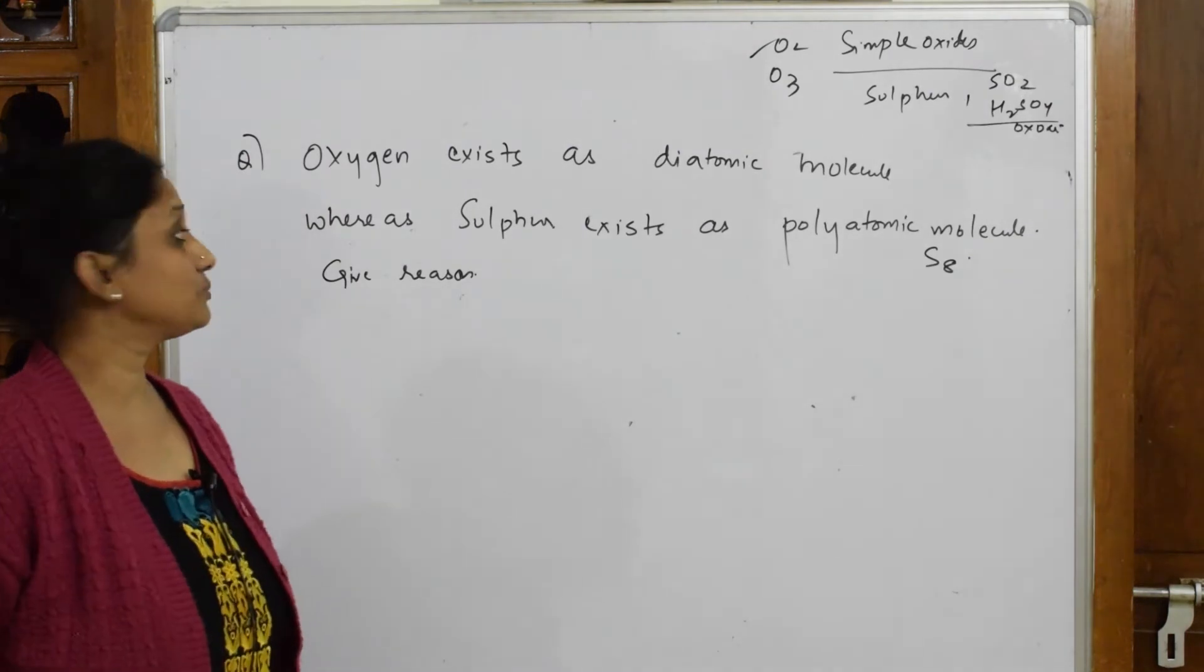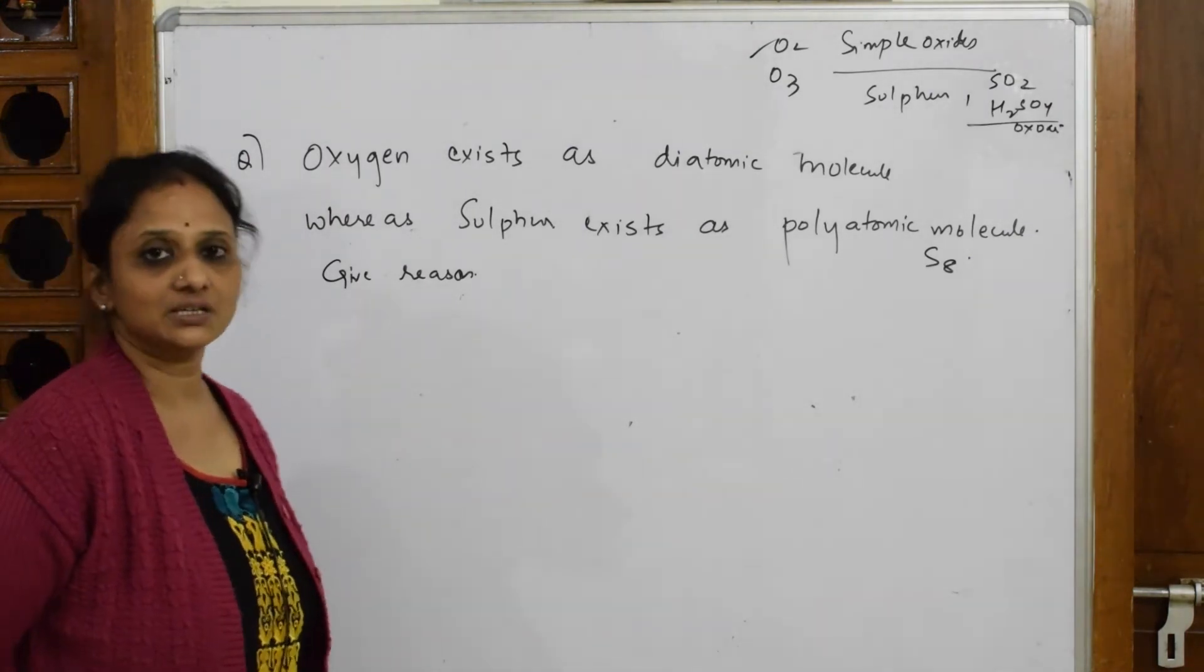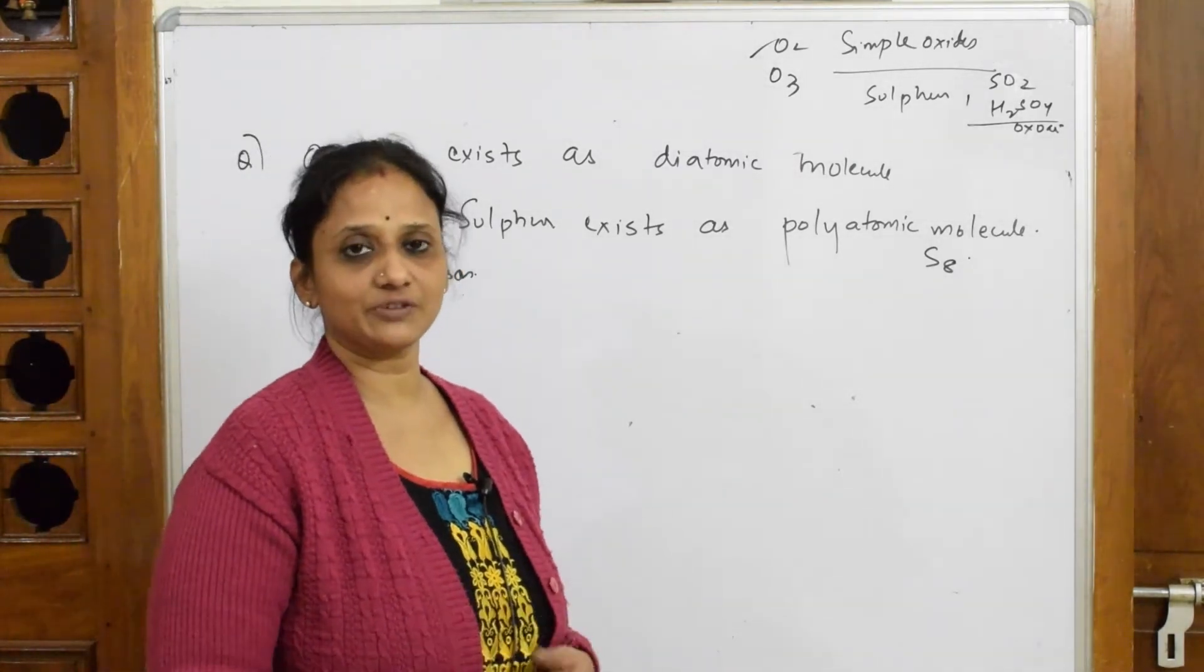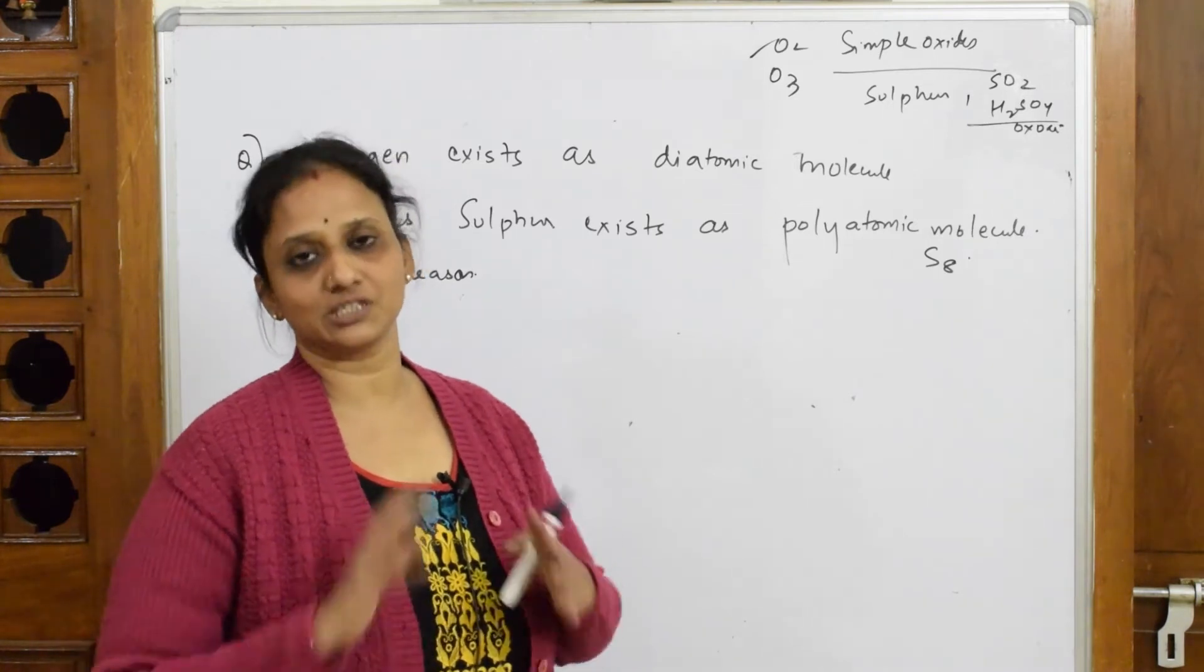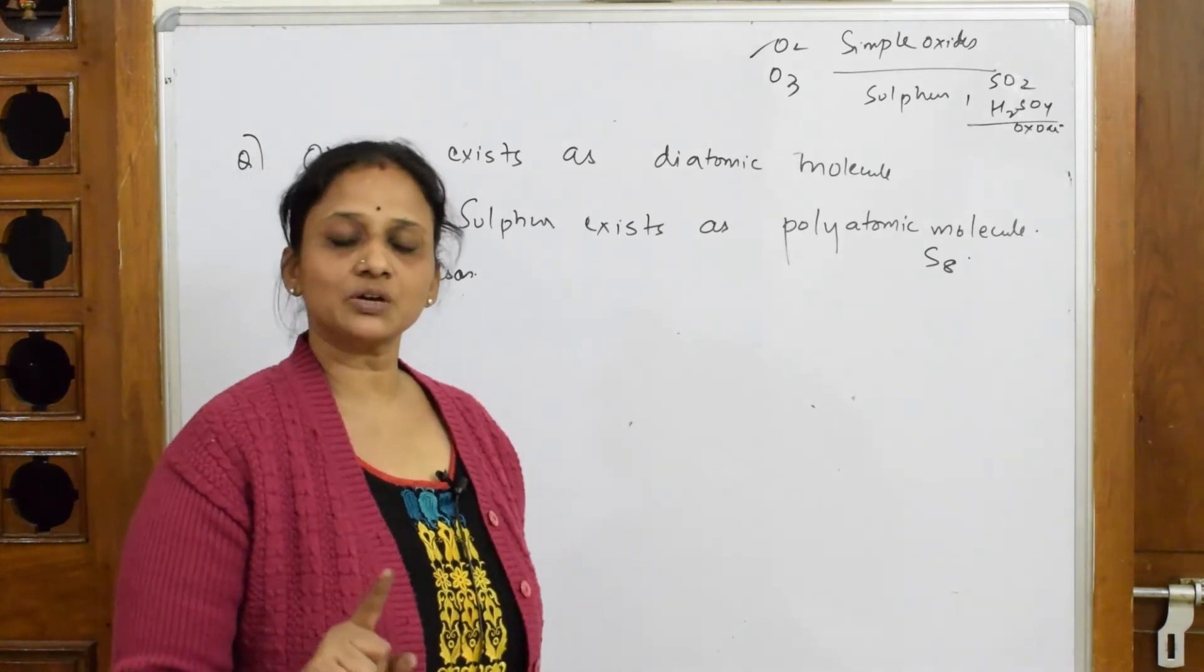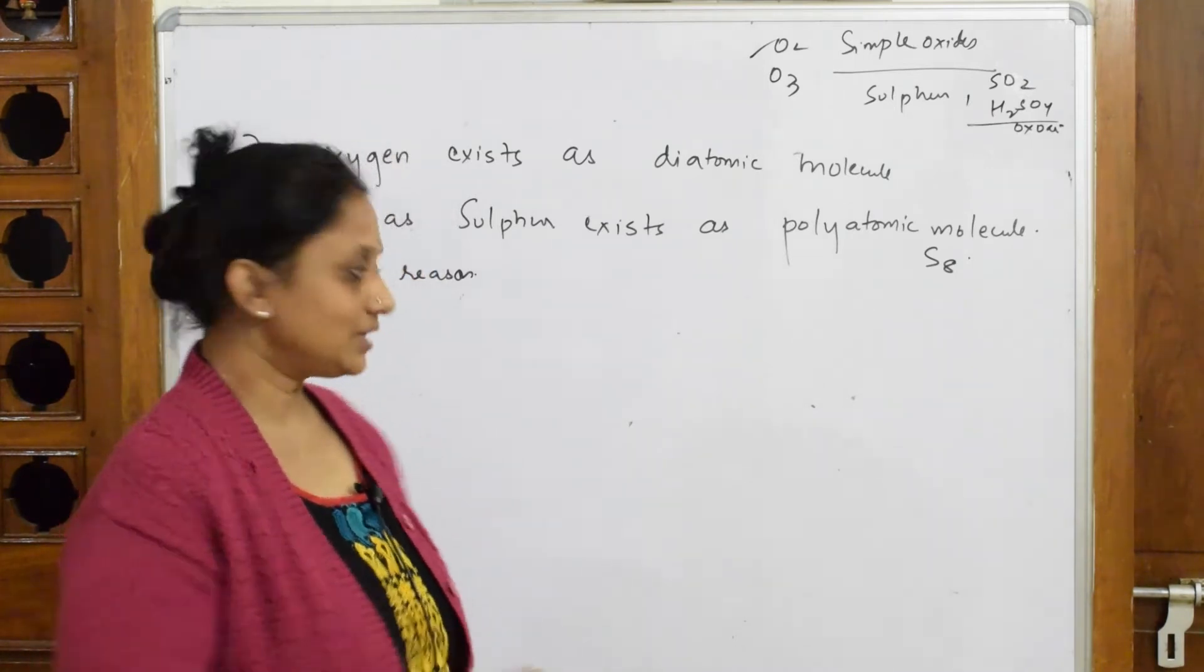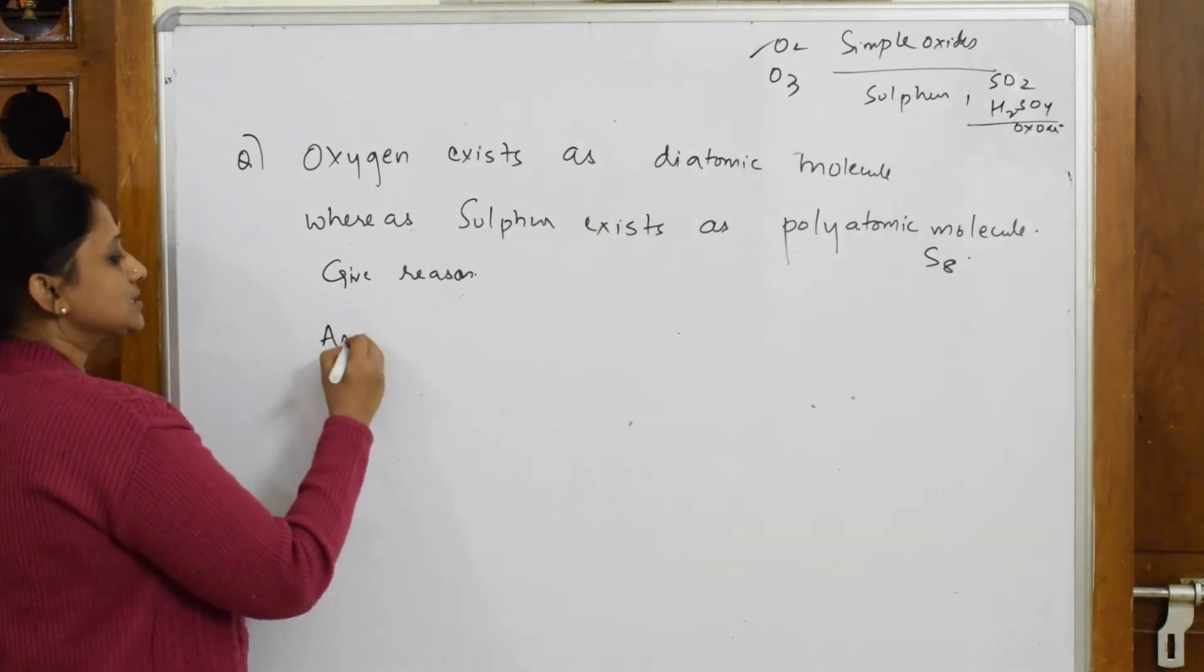Oxygen acts as a diatomic molecule whereas sulfur exists as polyatomic molecule, give reason. So basically this is a one-mark question. I have seen students when I was correcting the board papers, writing big paragraphs for this. Please don't do that. It is a one-mark question. So, what is the relevant keyword? What is the main thing? Why is sulfur existing as a larger molecule?